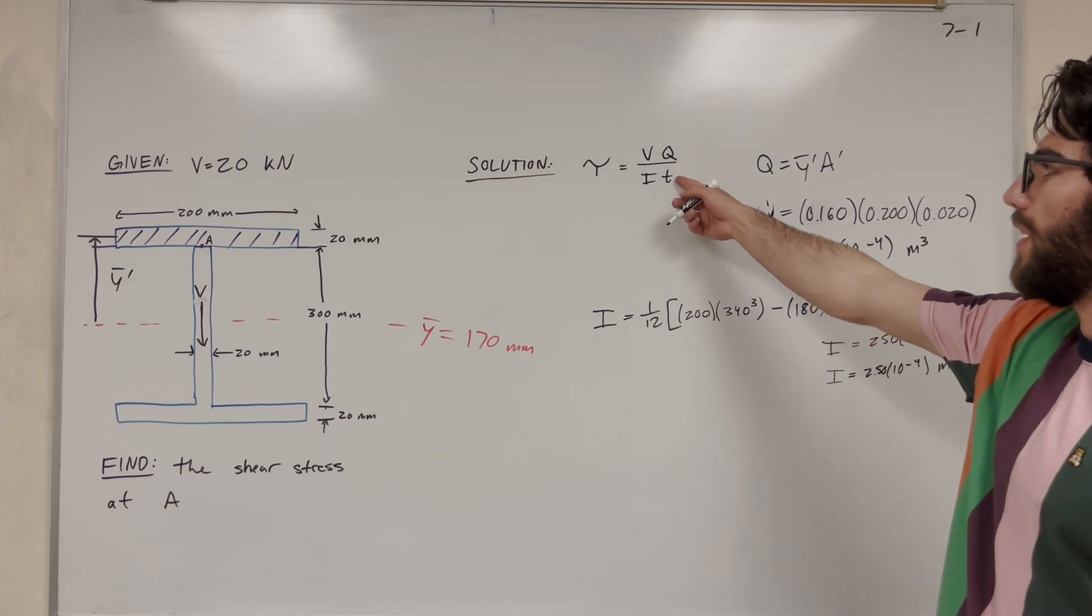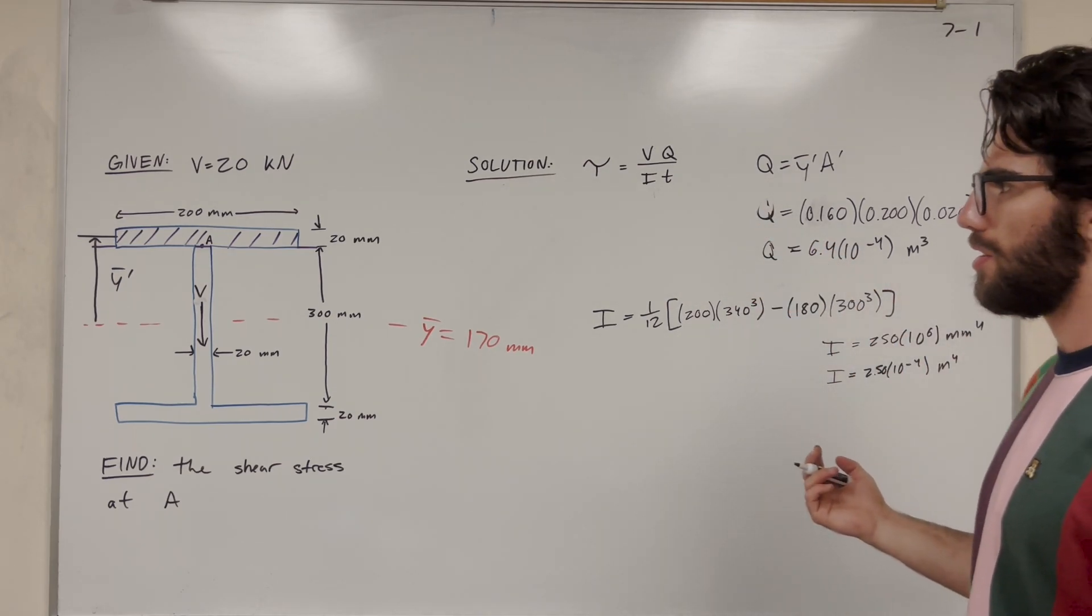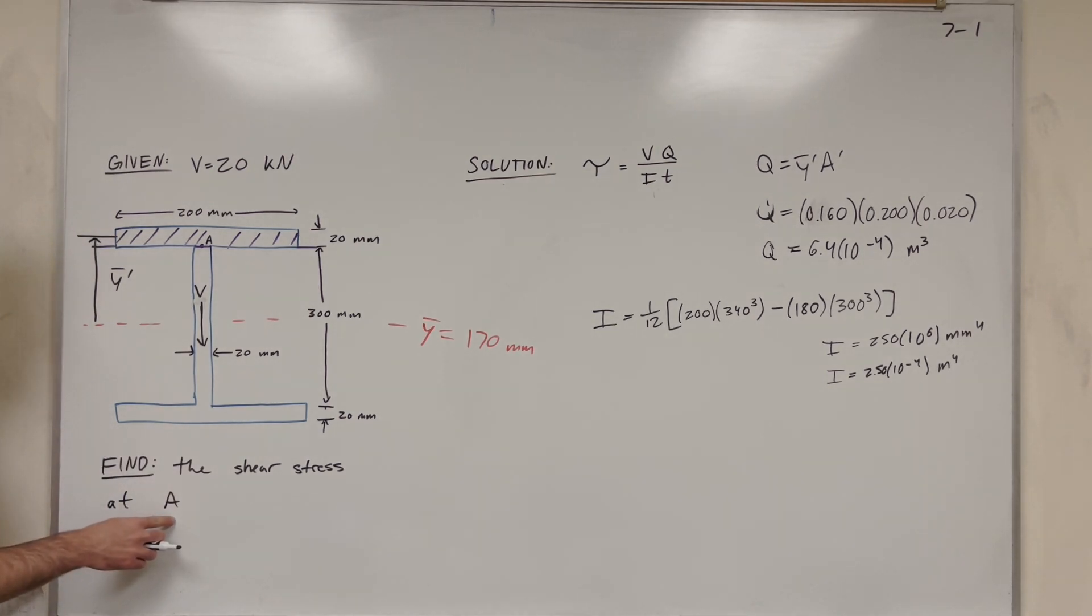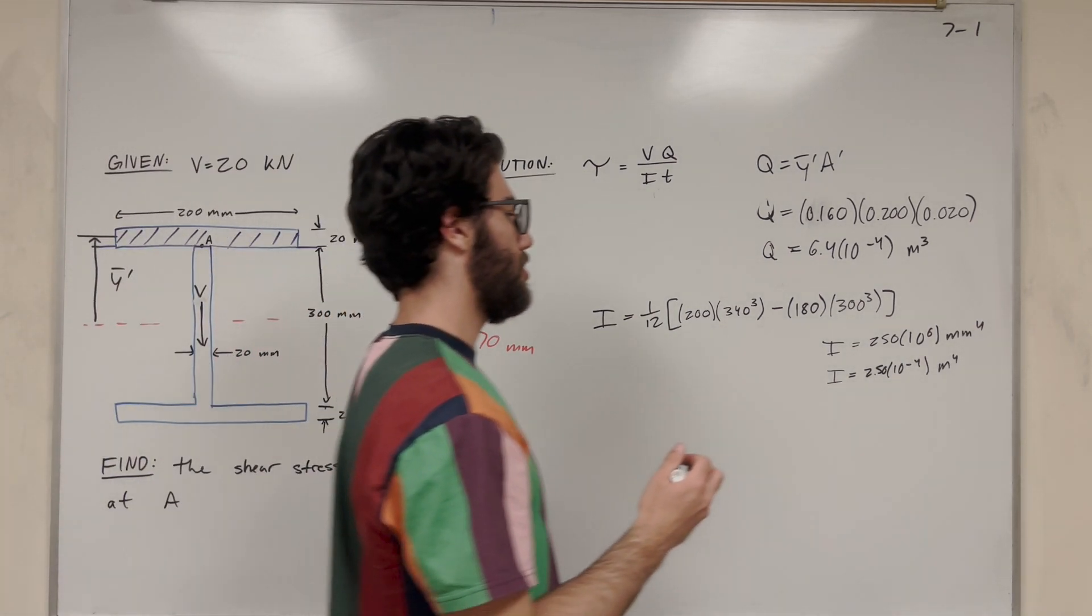So then we have one last thing to find, which is T. T is going to be the cross-sectional area of the point we're taking at. We're trying to find the shear stress at A, and A lies in here. So the cross-sectional area is just that distance, which is the width, which is 0.020 meters.